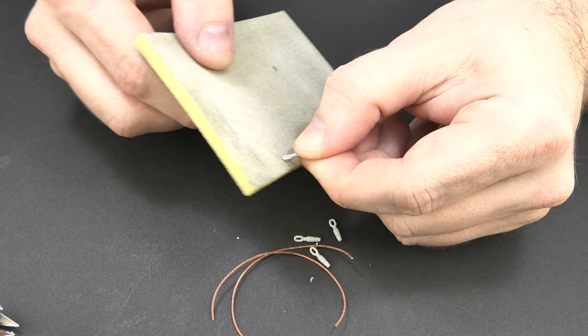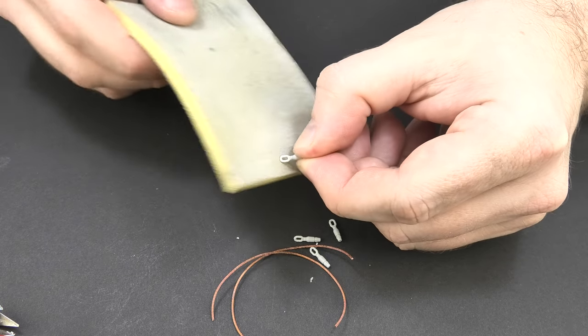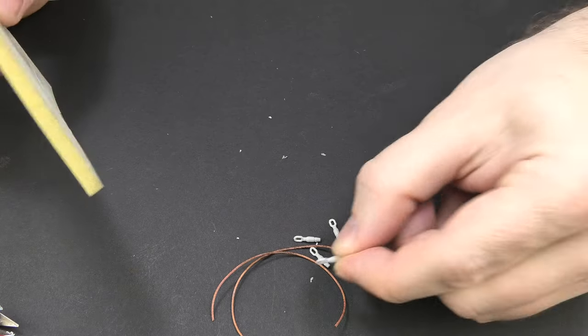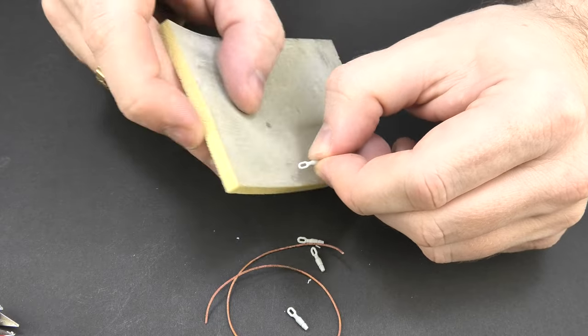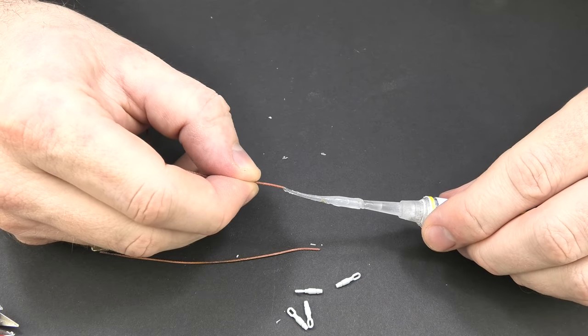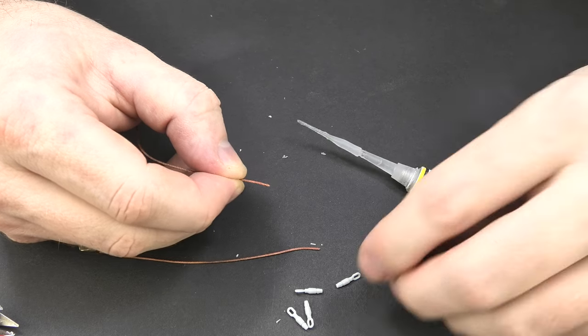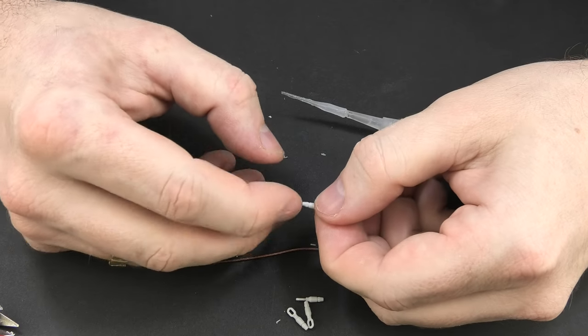After sanding the resin we can focus on the metal cables. Generally the pieces that the producer puts in the box are a little longer so you will need to trim them a bit. It's worth remembering to do it with sharp tools because it may end up breaking the tip and having problems with embedding it in the resin end hole.